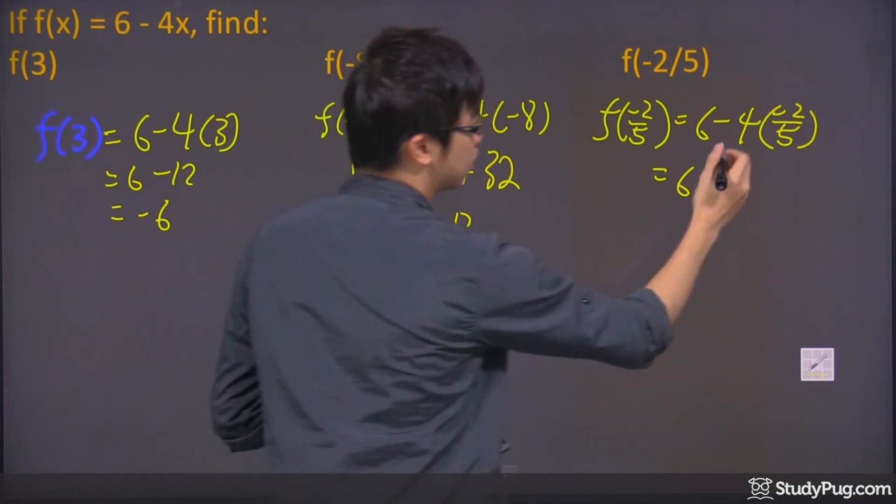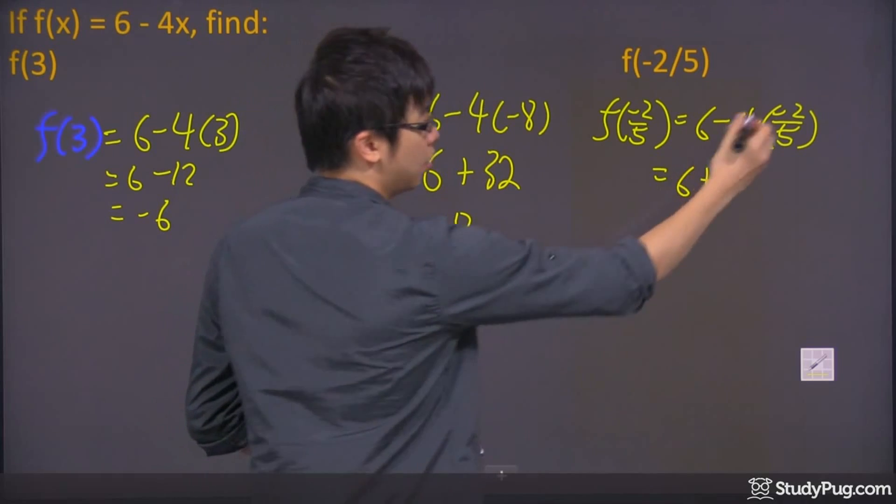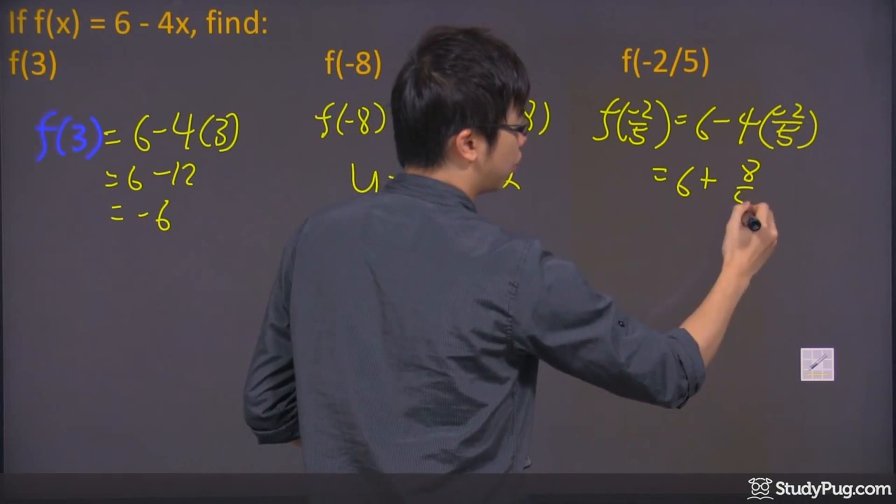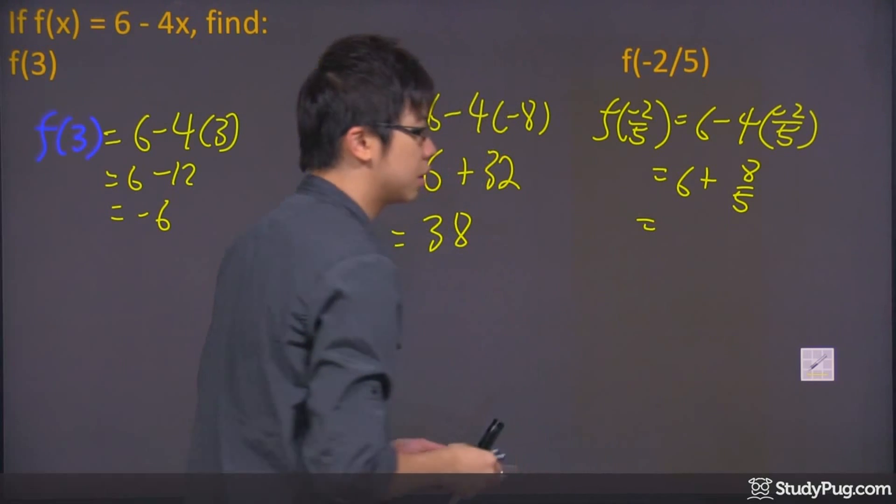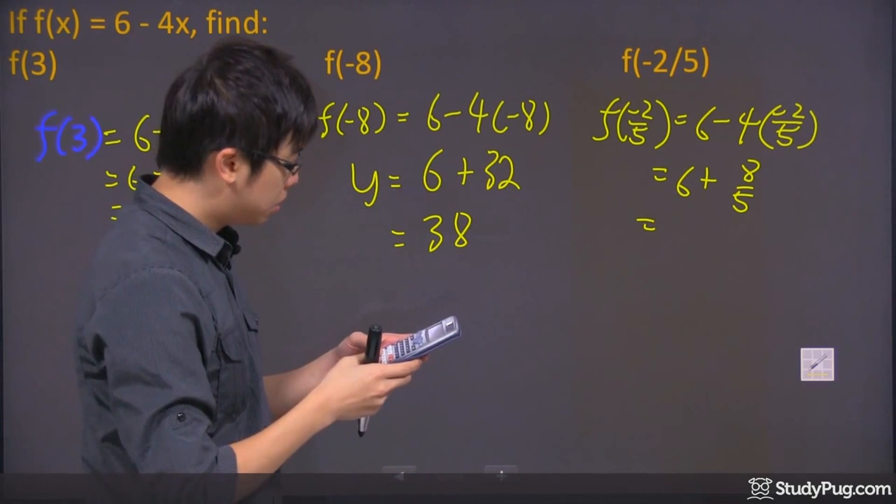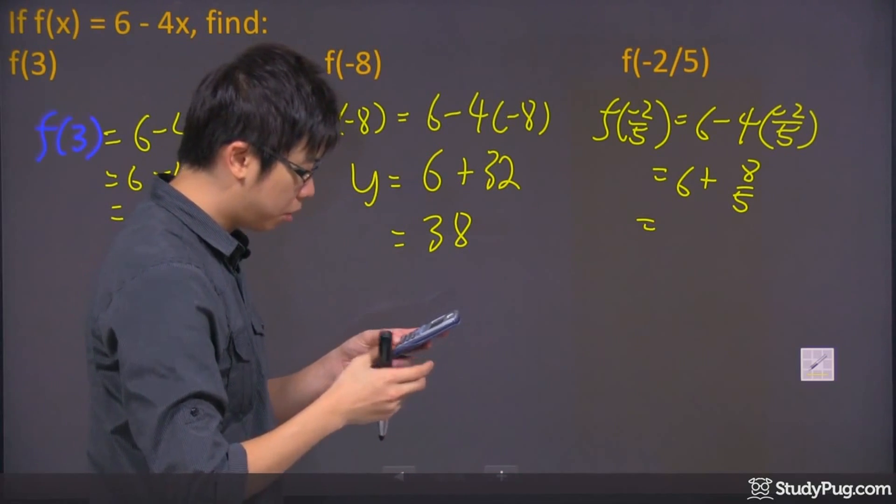Now it's going to give us the negative negative. It gives you the positive. 4 times 2 is 8 over 5. So technically that is your final answer because you can just write it down as 6 plus 8 over 5. But let me see if I can just make it a little bit more simpler.